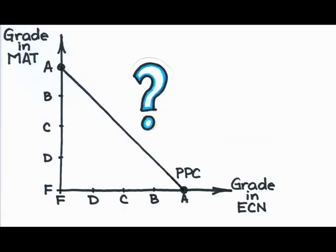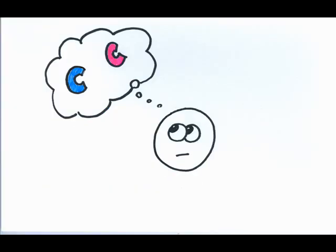What point will the student choose? Well, it depends on the decision maker. A student might choose a C in both classes because at least they'd be passing both classes, but what if the GPA in your major matters more than your overall GPA? If you're a business student, you might choose a B or an A in economics then over a passing grade in math.